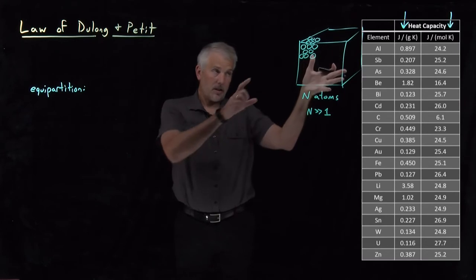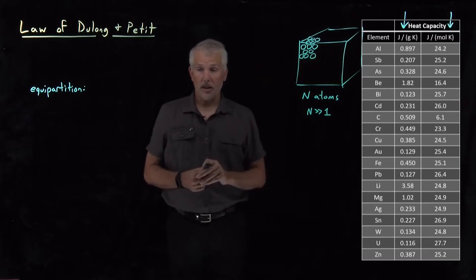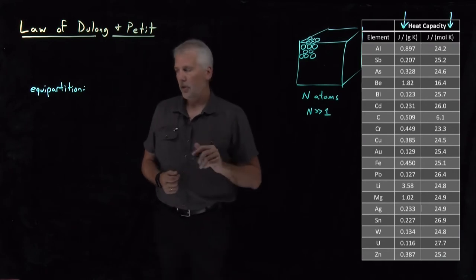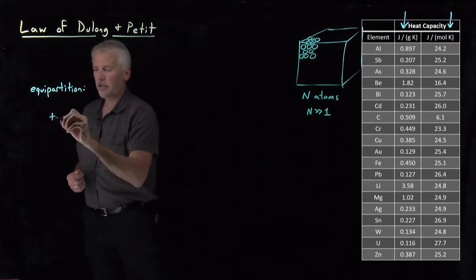So we've got, essentially, a macroscopically large molecule that consists of many atoms of this particular element. So if we then, to use the equipartition theorem,